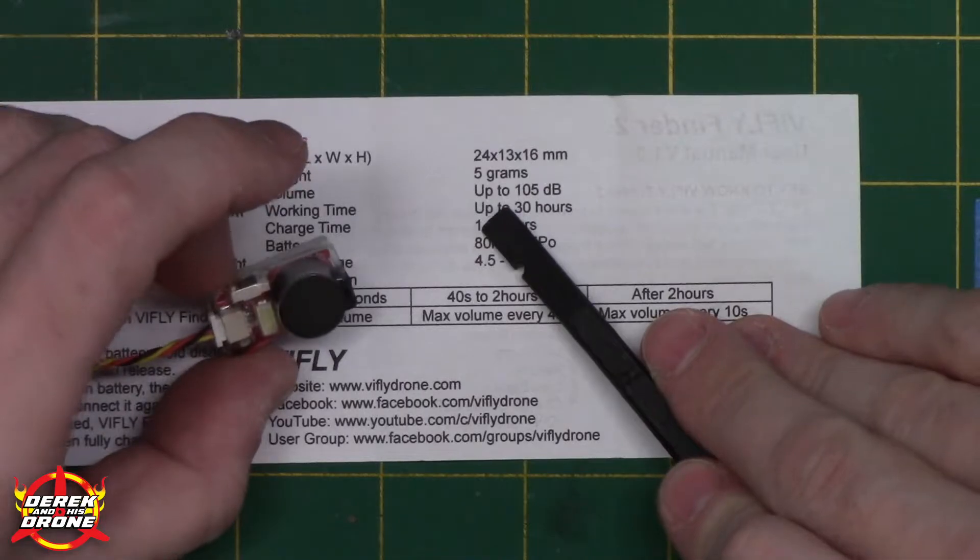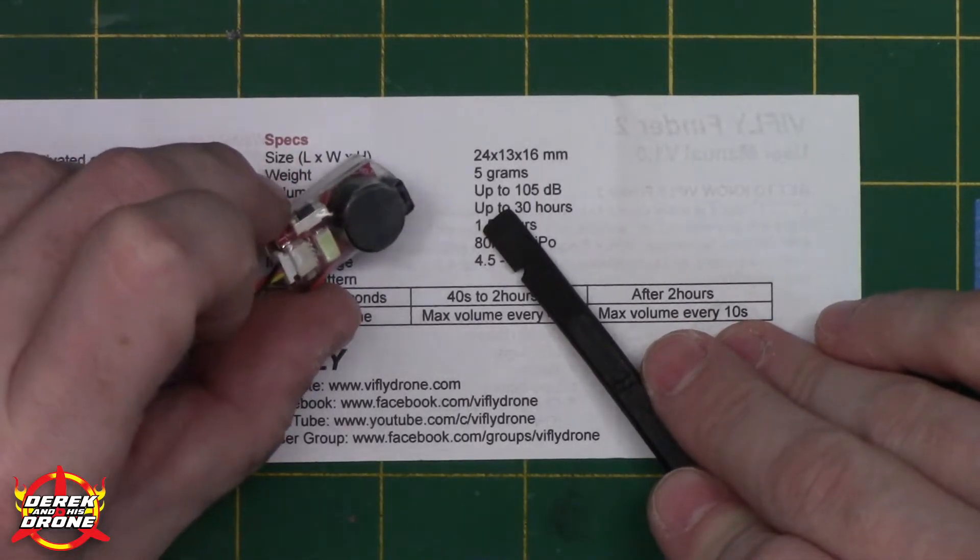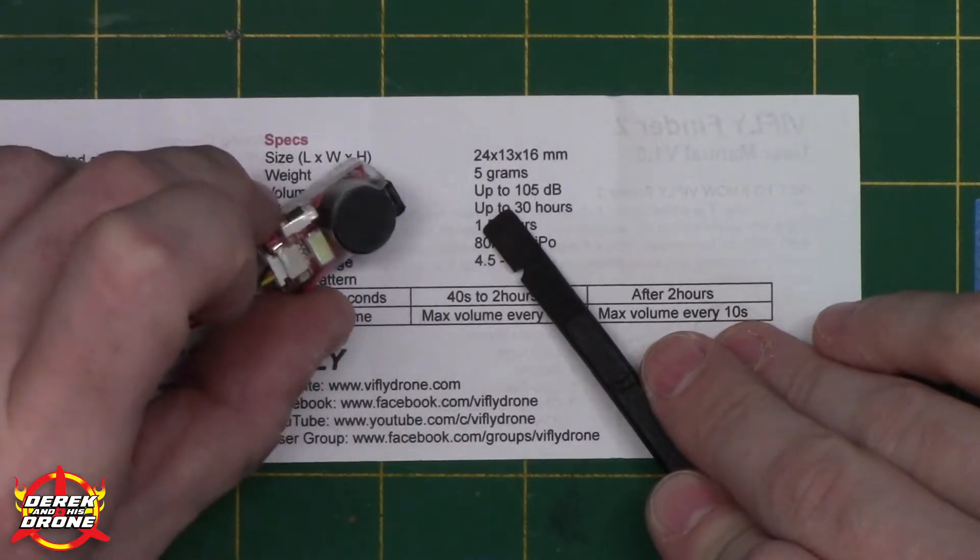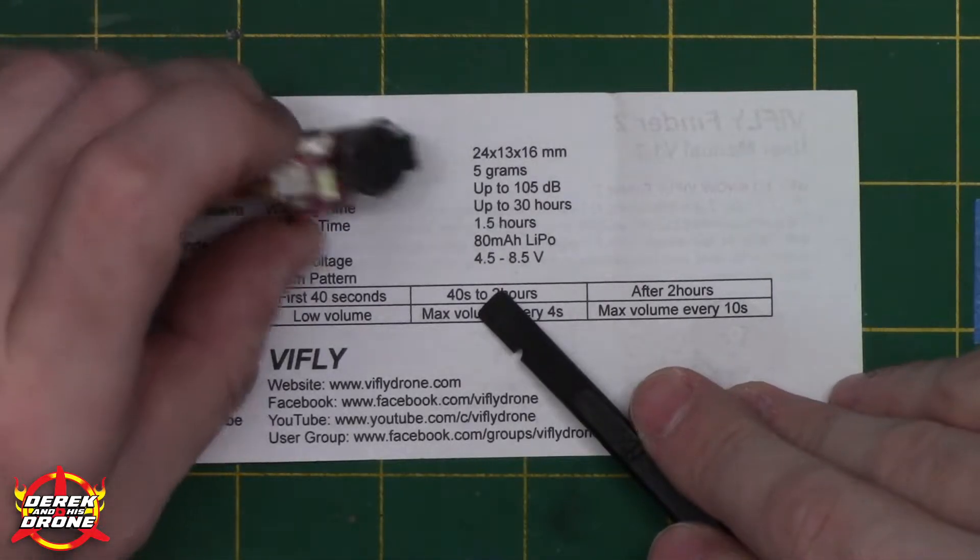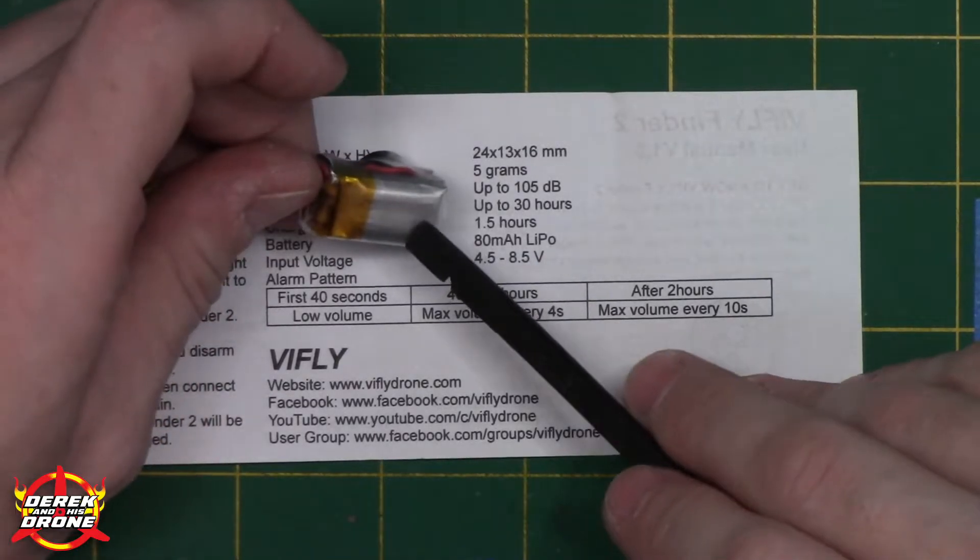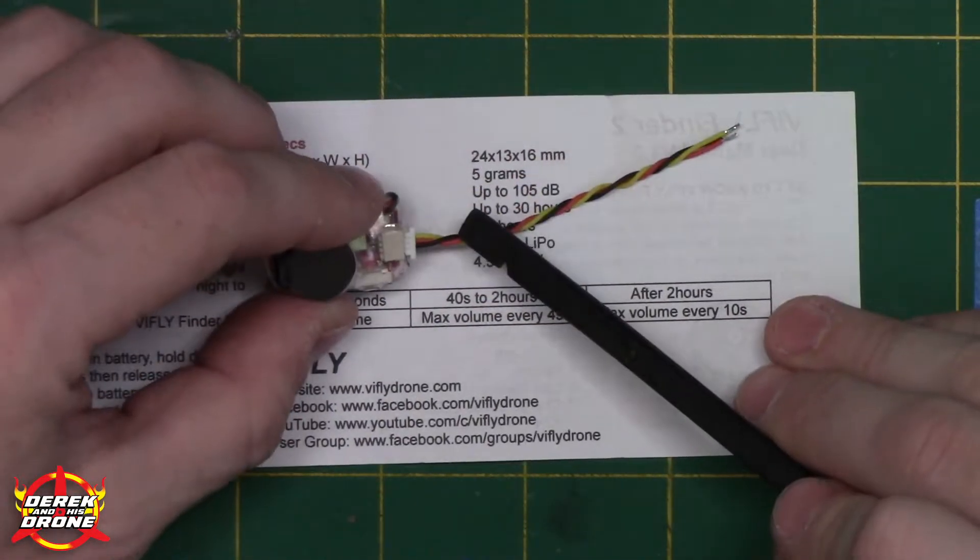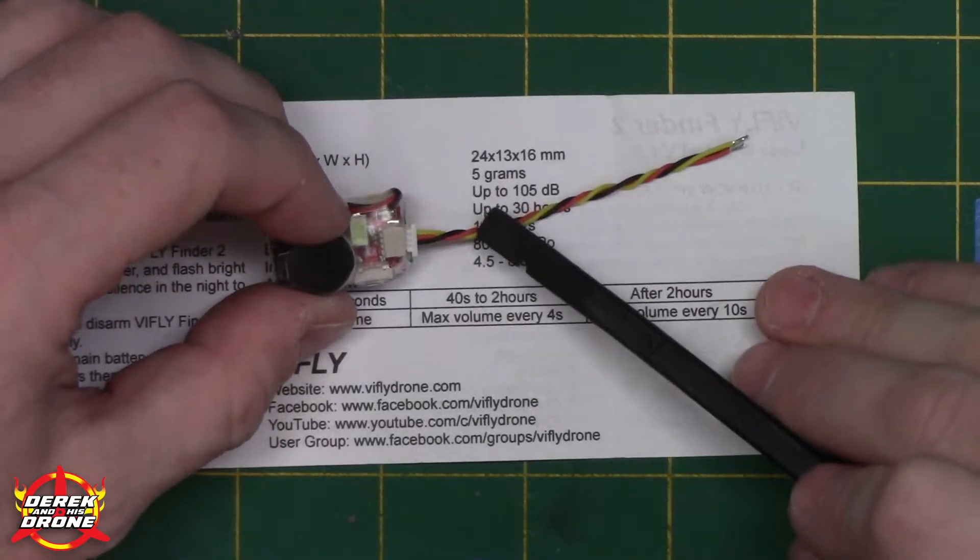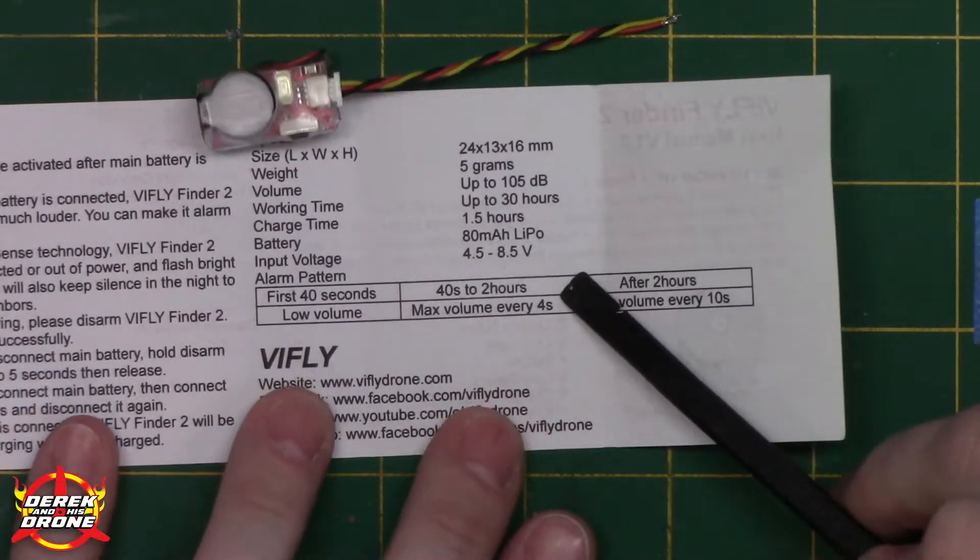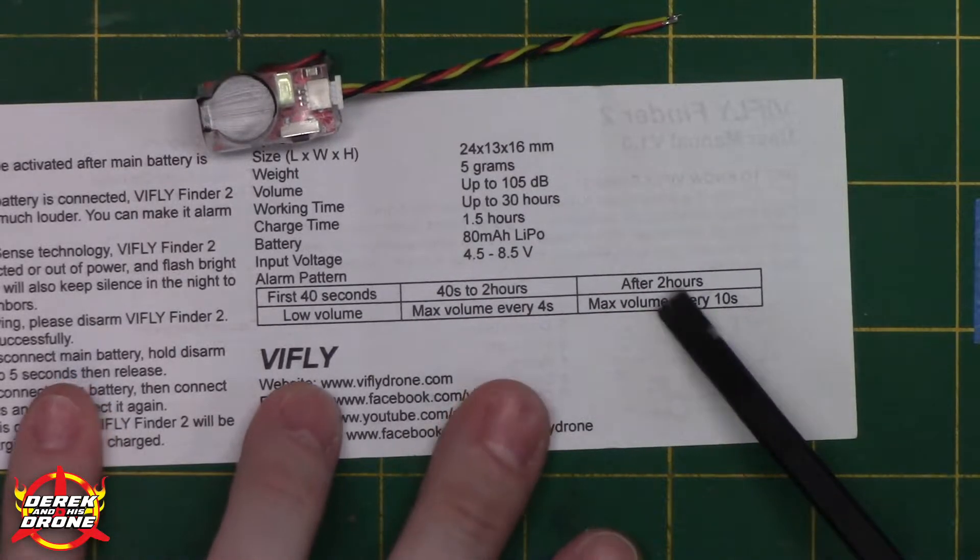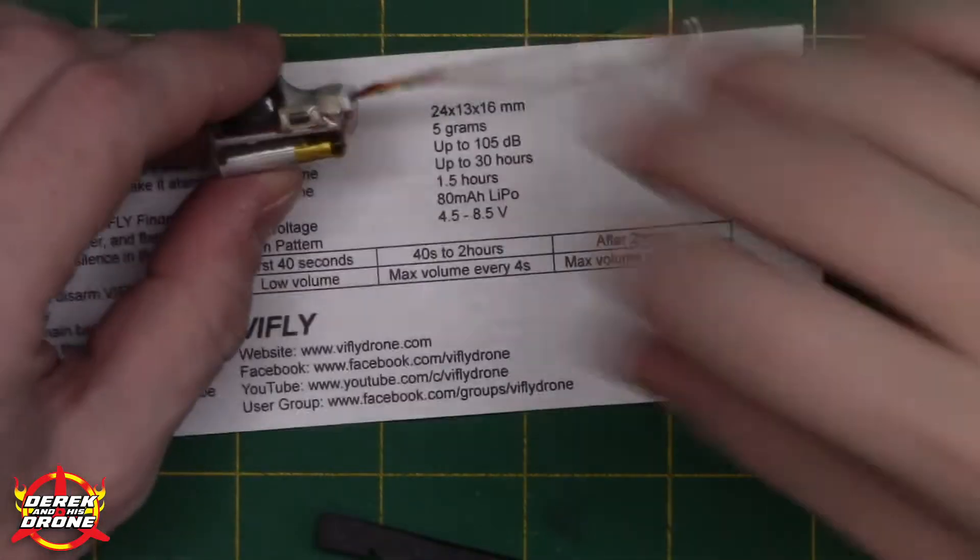Five grams, so it's not too heavy. Super loud buzzer in it, it says 105 decibels. This is much louder than your standard buzzer that you're going to be putting in your drone. Average charge time about an hour and a half. 80 milliamp lipo, it's just a little tiny baby battery. Our input voltage four and a half to about eight and a half volts. That's nice to have a little bit of range because not all regulators are going to come in at exactly their specific voltage.